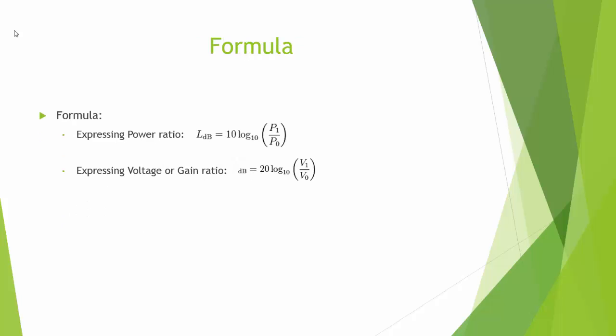The formula for dB: when we want to give the ratio of power, it is 10 log of P_output over P_input — the power of one thing to the power of something else. And when we want to talk about the ratio of voltage or gain in dB, it is 20 log of one voltage to a reference voltage.